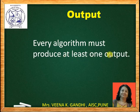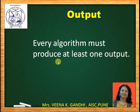Next property: output. Every algorithm must produce at least one output. After applying a finite number of steps on input, the algorithm must produce at least one output. It can produce more than one output also.